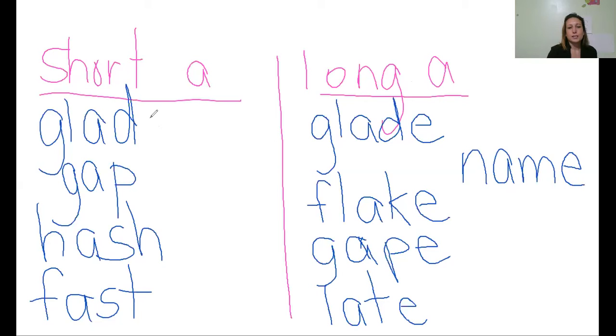Let's go through and read these words. We have in our short A column glad, gap, hash, fast. All of those the A says A. In our long A column, let's read them. We have glade, flake, gape, late, name. All of those the A says A. It is long. And all of those use the A consonant E pattern. Nice job on reading and writing those words today.